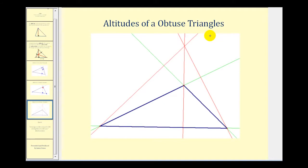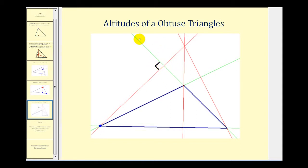The last case is if we have an obtuse triangle, where one of the angles is between 90 and 180 degrees. The intersection of the altitudes will be outside the triangle. If we select this vertex and want to construct the altitude to the opposite side, we will have to extend the opposite side, as we see here in green. The altitude forms a right angle with the extension of that side. The same thing is true for the altitude from this vertex to the extension of the opposite side. And we do have to extend the altitude past the vertex in order to identify the point of concurrency, or the orthocenter.